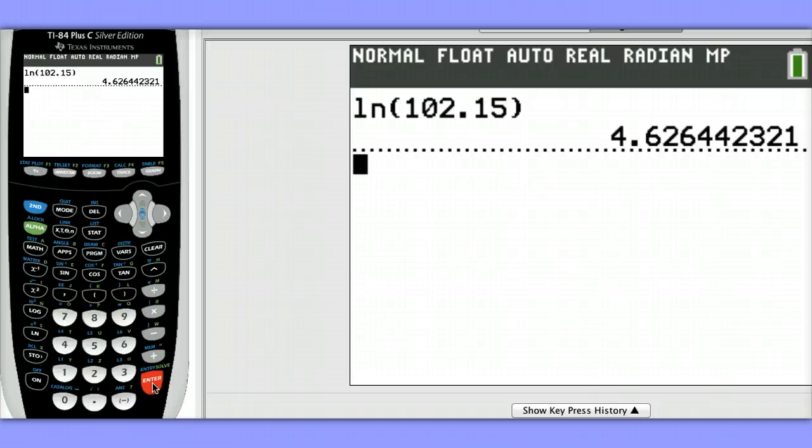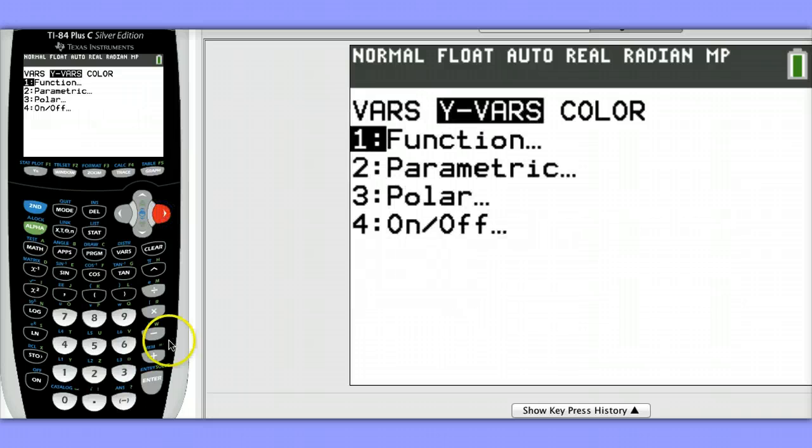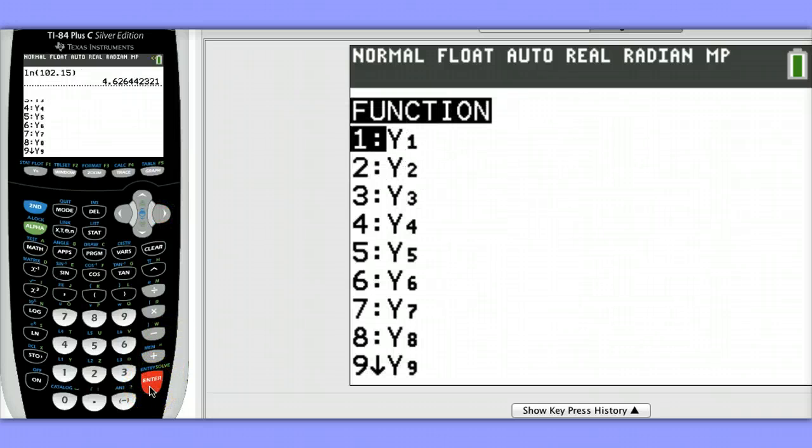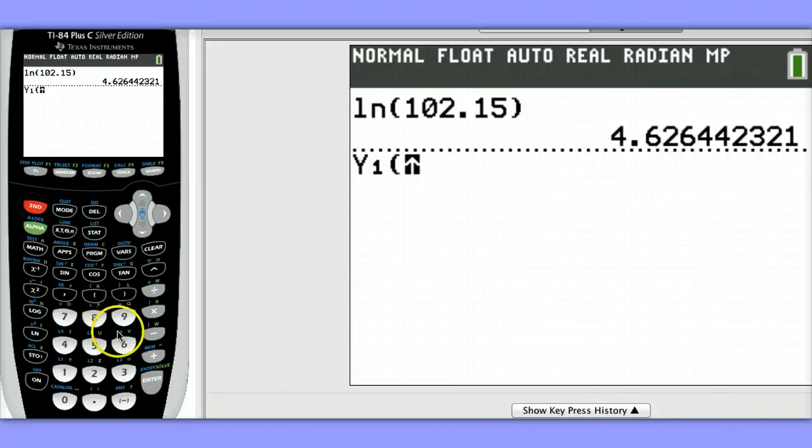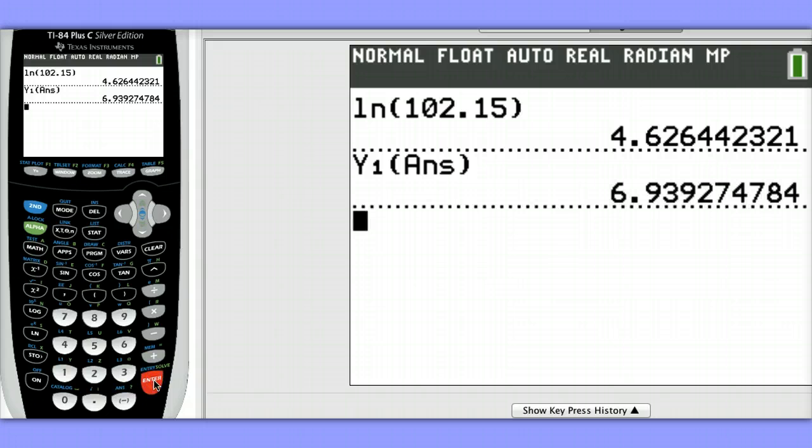Next, we're going to substitute this value into our regression equation. Remember, we stored our regression equation in Y1. To access Y1, we'll hit VARS, go over to YVARS, choose Function, then choose Y1. Then, I want to substitute this answer that I see on my screen into that equation. So I hit 2nd, and then the minus sign to use the previous answer that's on my screen. Finally, to find the answer to our question, the period of revolution for Eris, we need to take e to this power. To access e, we're going to hit 2nd, then the natural log button, and then we want to use this power, so I'm going to hit 2nd and the negative sign to use that as the answer.